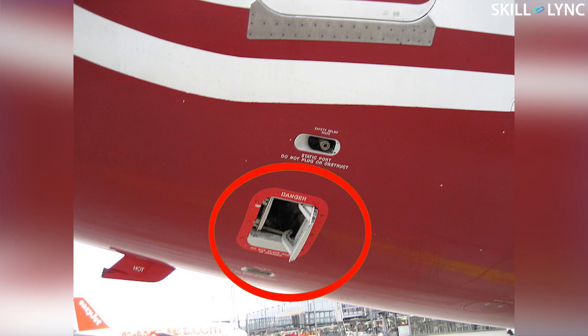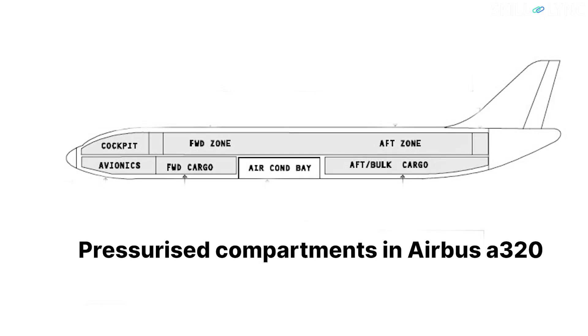There is a common misconception that the same air is used over and over again. In reality, the used air is generally let out of the aircraft through an outflow valve located on the fuselage.